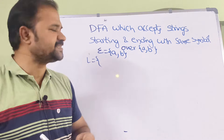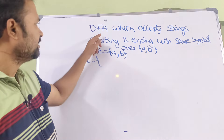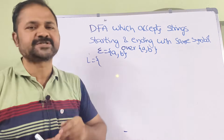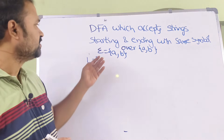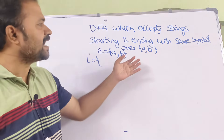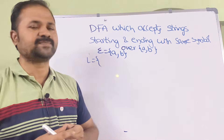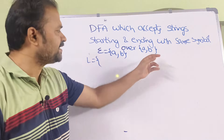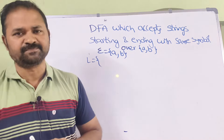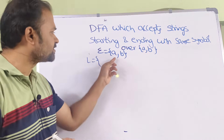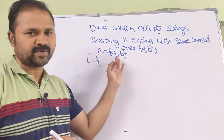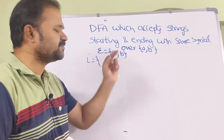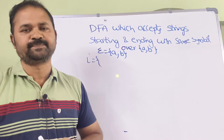Now let us discuss the DFA which accepts a set of strings starting and ending with the same symbol over the alphabet {A, B}. So here sigma is the alphabet, which mainly contains two symbols: A and B.